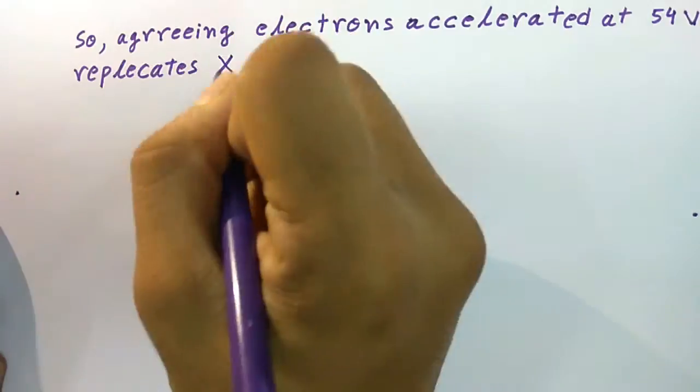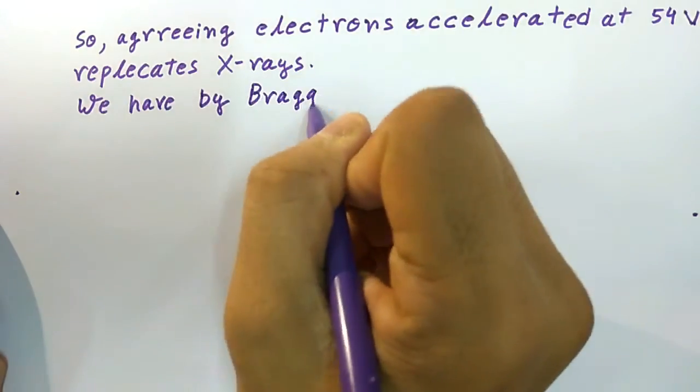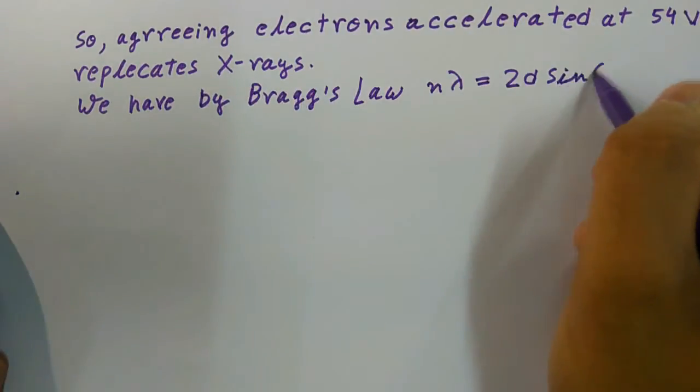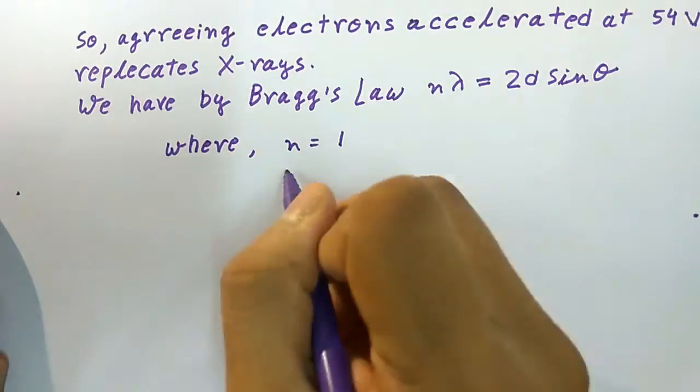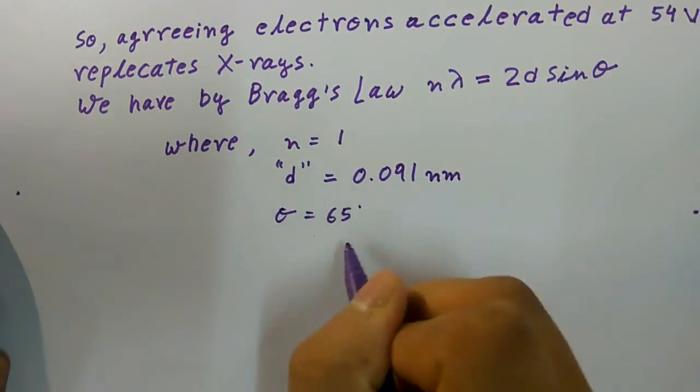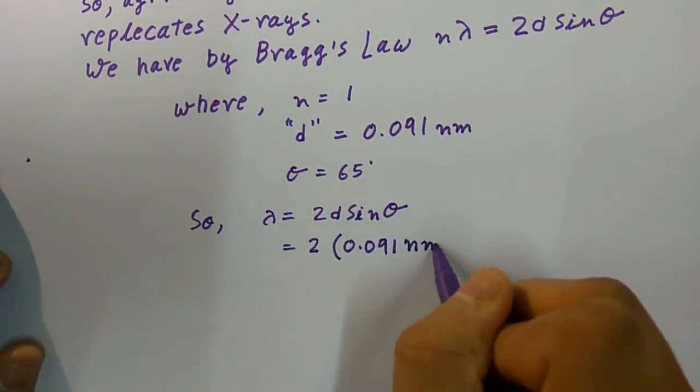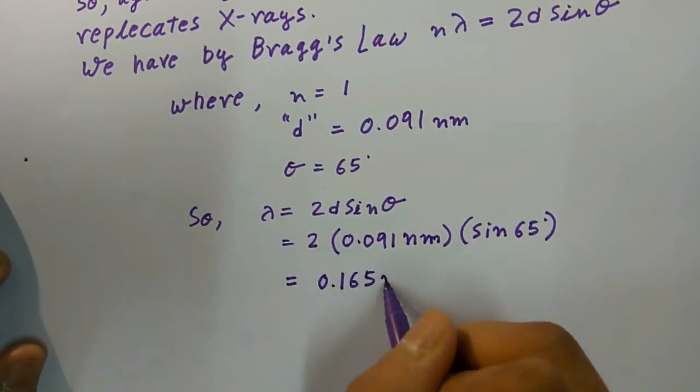d is equal to 0.091 nanometer is the spacing between lattices, θ is equal to 65 degree. So, λ is equal to 2d sin θ is equal to 2 into 0.091 nanometer into sin 65 degree, which is equal to 0.165 nanometer.